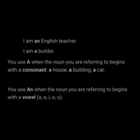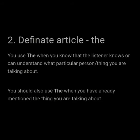The second type is the definite article THE. We use THE when the listener knows or can understand what particular person or thing we are talking about. We should also use THE when you have already mentioned the thing we are talking about.